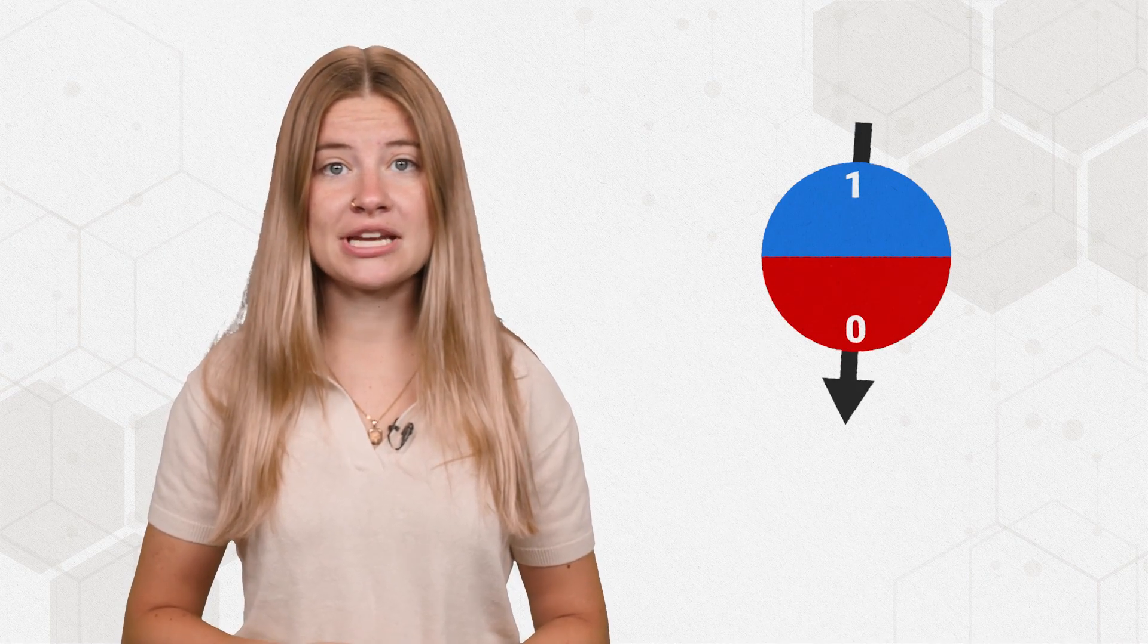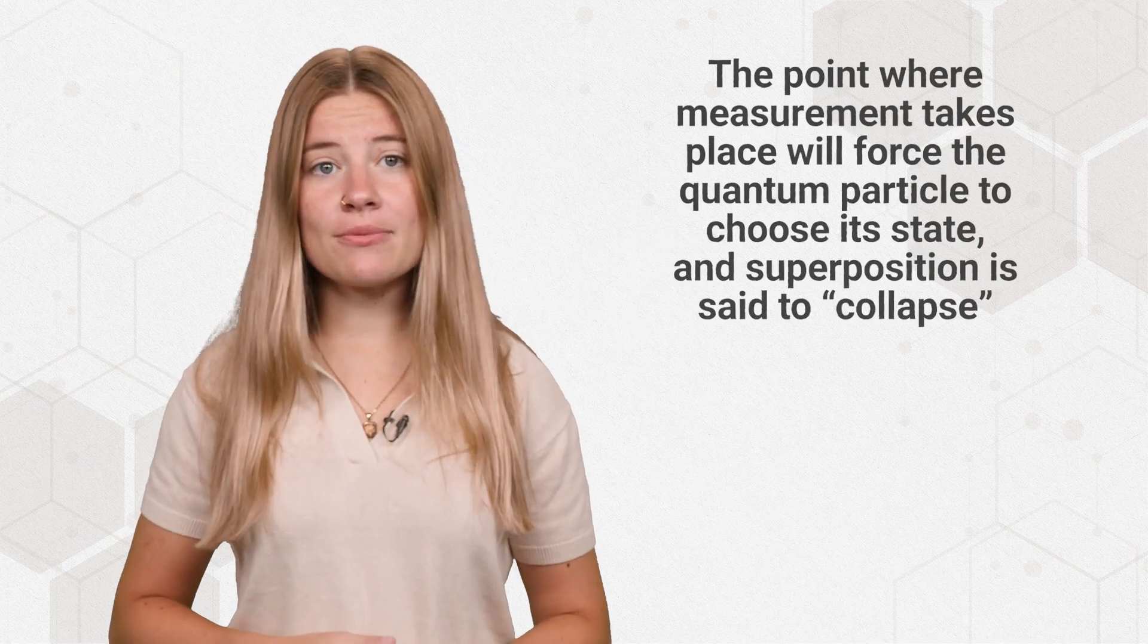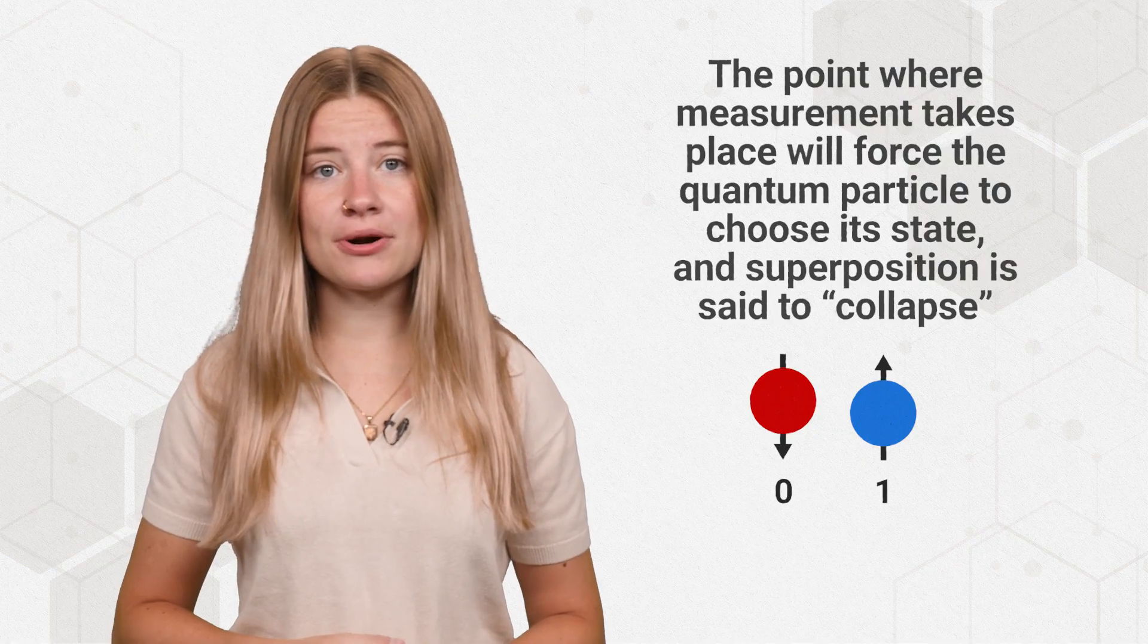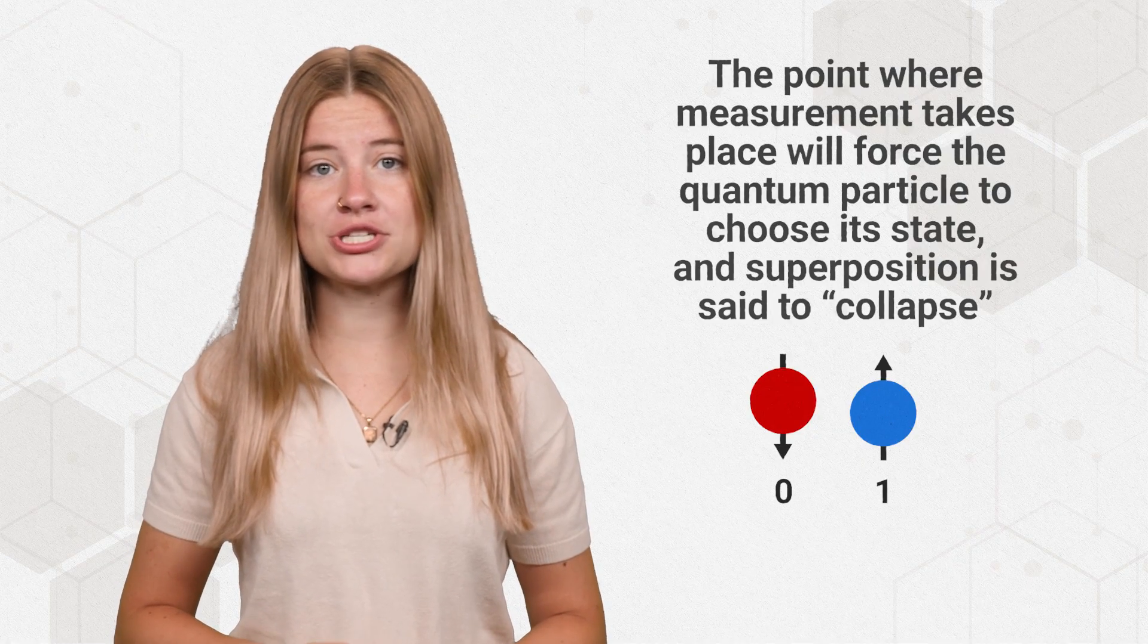Of course, a coin isn't a quantum particle, but it's the same idea for actual quantum particles such as electrons or photons. For example, when a particle is used in quantum computing as a quantum bit, or qubit, it can represent a logical 1 and a logical 0 and every possible state between the two extremes. The actual state of the qubit is only known when its state is measured. The point where measurement takes place will force the quantum particle to choose its state and superposition is said to collapse. So why is this notable?